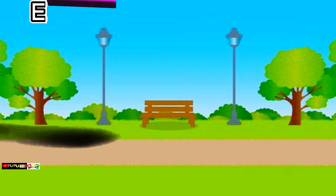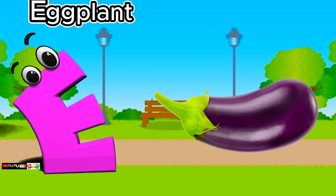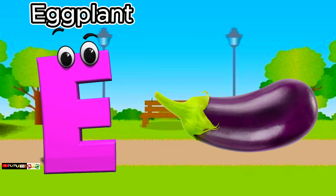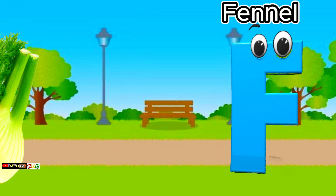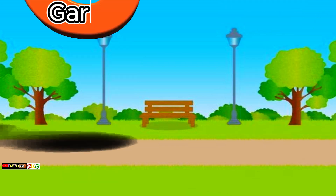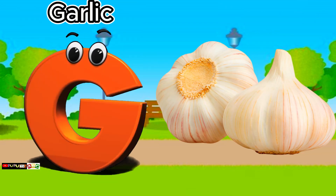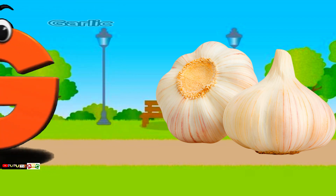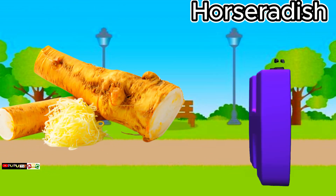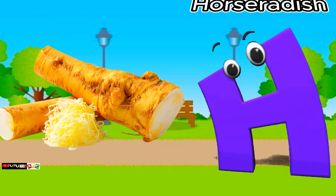E is for eggplant. E, e, eggplant. F is for fennel. F, f, fennel. G is for garlic. G, g, garlic. H is for horseradish. H, h, horseradish.